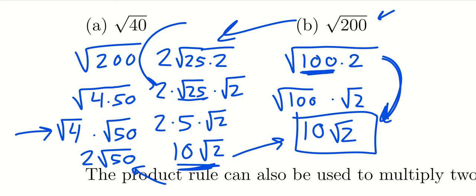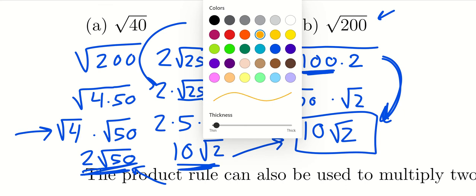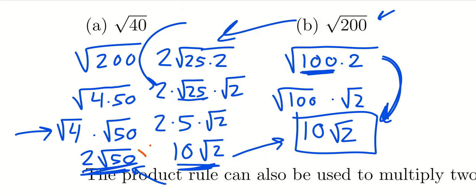If you don't find the largest perfect square divisor right away, that's fine — just make sure before writing your final answer that whatever remains inside the radical isn't divisible by another perfect square. For instance, there's no perfect square in our list that divides 2, so √2 is fully simplified. But 50 is divisible by 25, which tells us it can be broken down further.